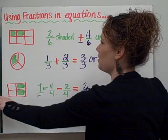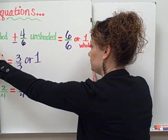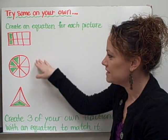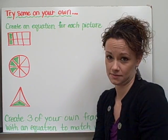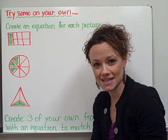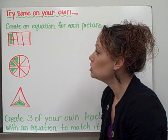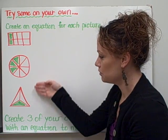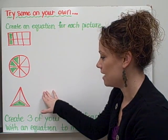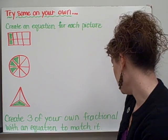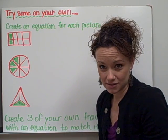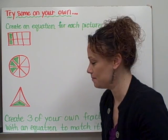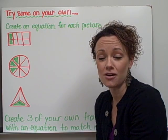Let's give you some examples to try on your own. I've given you 3 pictures, and I would like you to create an equation just like the examples you saw, using either addition or subtraction to represent the shaded and unshaded parts of these 3 pictures. After you finish that, your challenge activity is to create 3 of your own fractional pictures — your own shapes broken up into equal parts, shade a certain amount of them, and then write an equation to match each fractional picture.